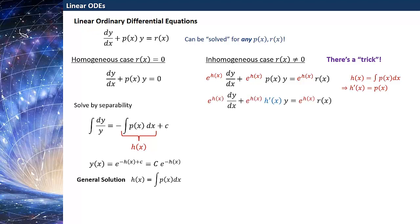Let me substitute in for p(x) that p(x) equals h prime. Now if I look at the left hand side, I can actually condense this down because it turns out the entire left hand side is just the derivative with respect to x of the product of e to the h times y.